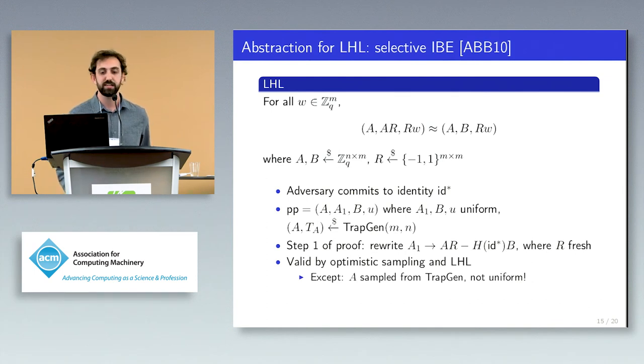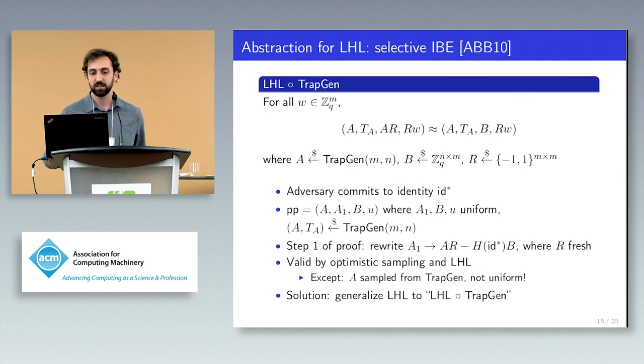There is an issue with this, however. Because A is sampled from TrapGen instead of uniformly, we cannot directly apply the leftover hash lemma to the setting. In order to express our use of the leftover hash lemma here, we have to instead generalize the leftover hash lemma to the LHL composed with TrapGen, which allows us to apply it into our proof. In this extended LHL, we sample A from TrapGen instead of from uniform. We give both the matrix A along with the generated trapdoor T sub A to the adversary for the leftover hash lemma. This is somewhat counterintuitive, but turns out to be fine, since the leftover hash lemma is a statement about statistical distance rather than computational distance.